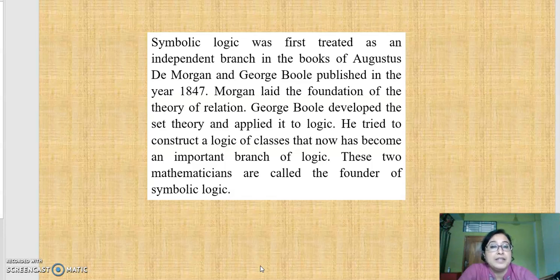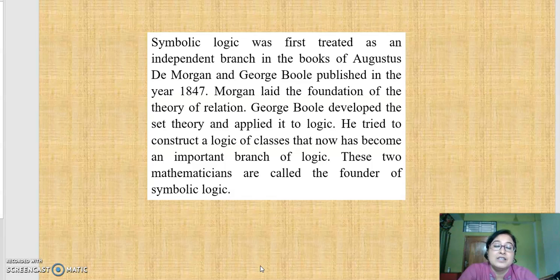Symbolic logic was first treated as an independent branch in the books of Augustus De Morgan and George Boole, published in the year 1847. De Morgan laid the foundation of the theory of relations. George Boole developed that theory and applied it to logic. He tried to construct a logic of classes, which has now become an important branch of logic. These two mathematicians are called the founders of symbolic logic.